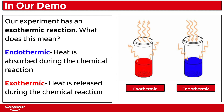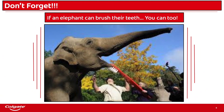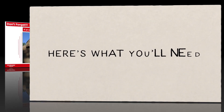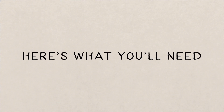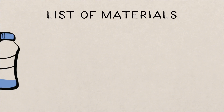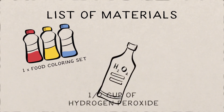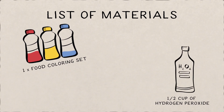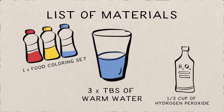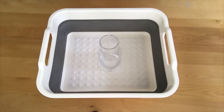And lastly, don't forget — if an elephant can brush their teeth, you can too! Here's what you'll need: food coloring of your choice, a half cup of hydrogen peroxide, three tablespoons of warm water, liquid dish soap, and one tablespoon of dry yeast.